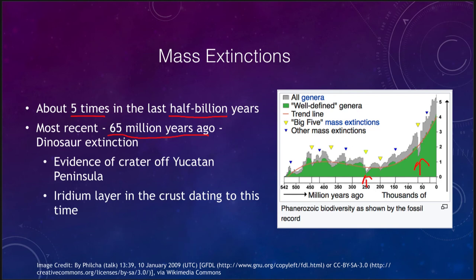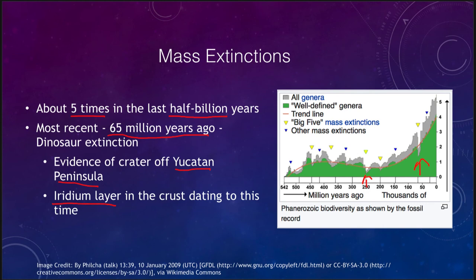How do we know this was an astronomical event? There are two pieces of evidence. First, there is a crater off the Yucatan Peninsula that can be detected through gravity maps of the Earth's surface, and it dates to about 65 million years ago. Second, there is a layer of iridium in the crust dating to this time. We find dinosaur fossils below the iridium layer but not above it. Iridium is very rare in the Earth's crust, so finding a concentration of it is significant — and iridium is more common in meteorites, lending further evidence that the extinction was caused by a massive impact.